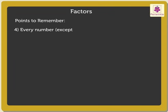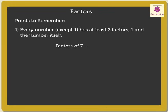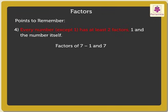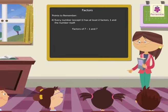Point 4: Every number except 1 has at least 2 factors: 1 and the number itself. Let us look at the factors of 7. They are 1 and 7. No other pair of numbers when multiplied together will give the product 7. That is, the number 7 has at least 2 factors, 1 and 7 — that is, 1 and the number 7 itself. Hence, we can say that every number except 1 has at least 2 factors: 1 and the number itself. Do remember these points properly. They will help you to find the factors as we go further.